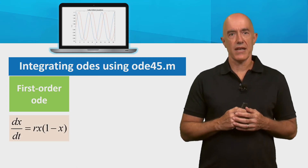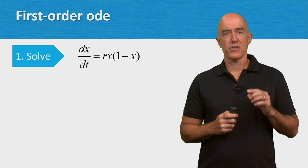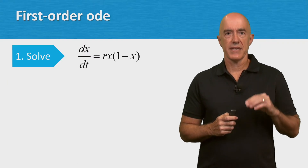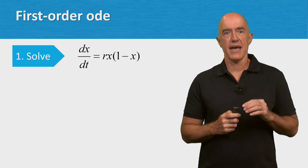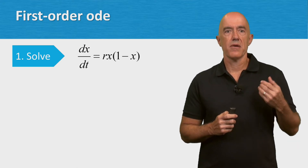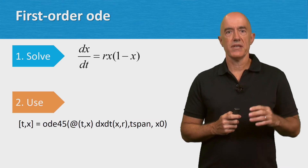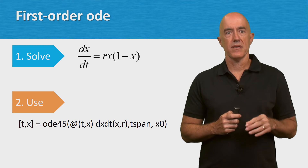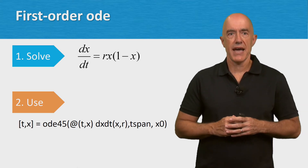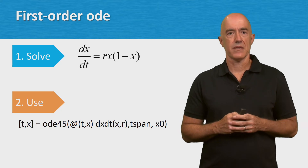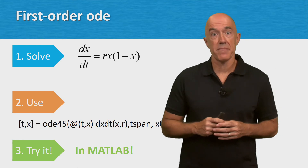We'll start by integrating a first-order ODE. We'll solve the logistic equation dx/dt equals r times x times (1 minus x), with r a parameter. We'll use the MATLAB function ode45.m to integrate the ODE. I'll explain the syntax as we code the problem. Let's try it in MATLAB.